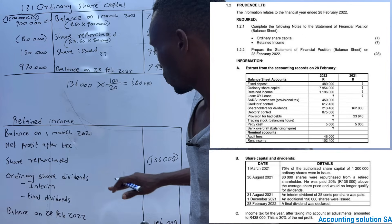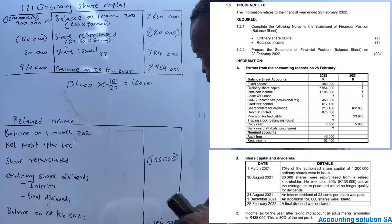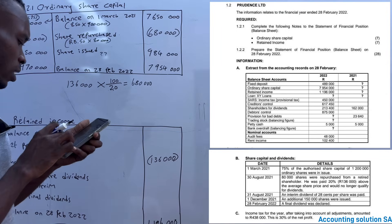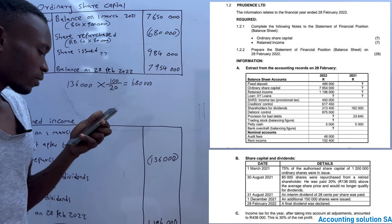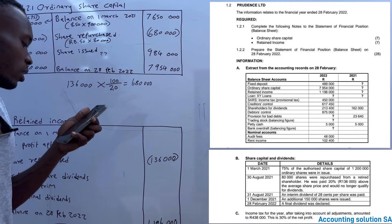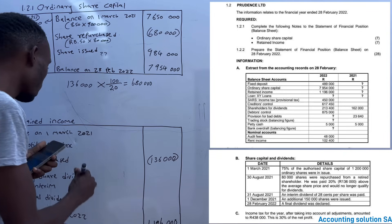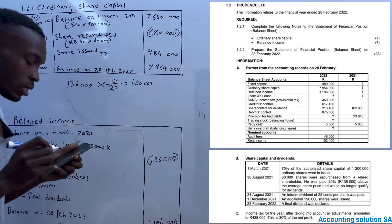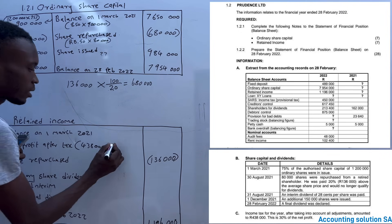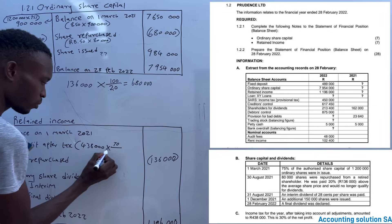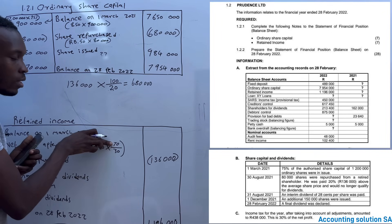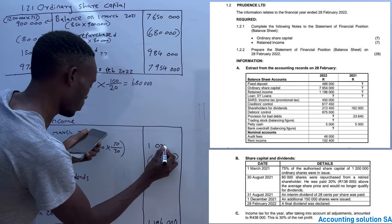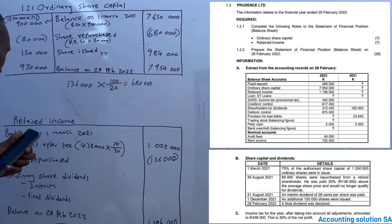Under the retained income note, we have the closing amount and the share repurchase amount. Now let's find the net profit after tax. They said income tax for the year amounted to 438,000 and this is 30% of net profit. So they didn't give us net profit after tax directly. We multiply 438,000 by 70/30 because after tax means 100% minus 30% equals 70%, giving us an amount of 1 million and 22,000.